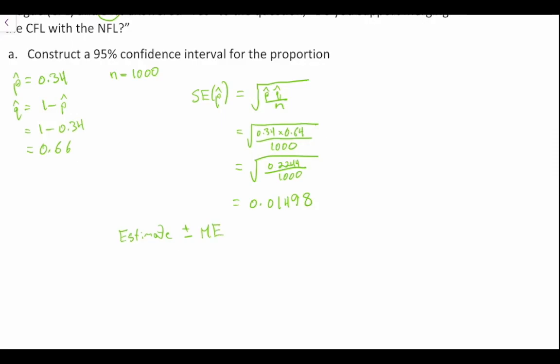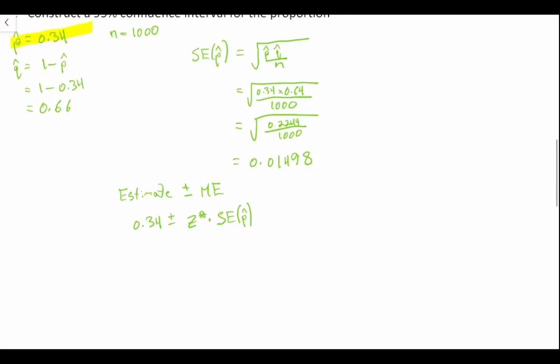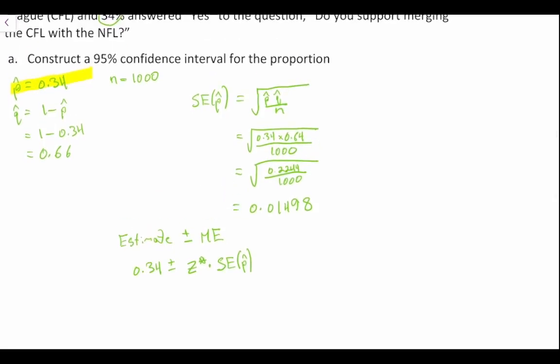So then we have our estimate, which is the proportion of our sample, 0.34, plus or minus Z star times the standard error of the proportion of our sample. So the big question is, what does this value for Z star equal? And as I said before, we determine the value of Z star depending on our level of confidence that we're looking for. In this case, we're looking for a 95% confidence interval.